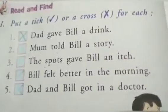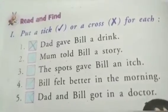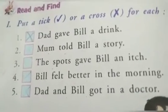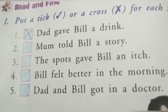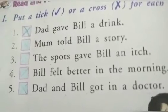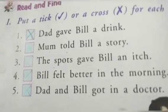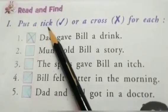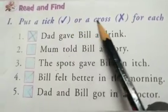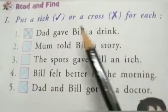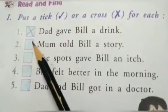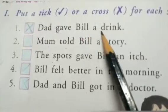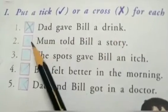Welcome back children. In this lesson we are going to do the exercise. The lesson name is 'Bill Fell Ill.' See number one — put a tick for right or a cross for wrong for each one. Dad gave Bill a drink — dad did.